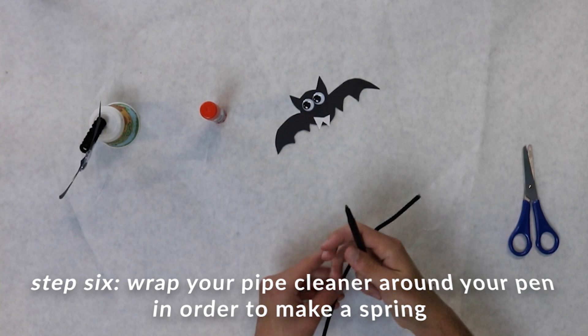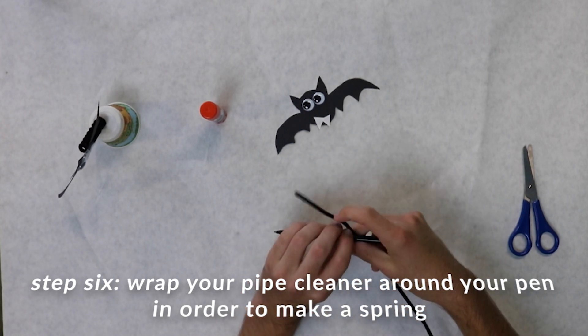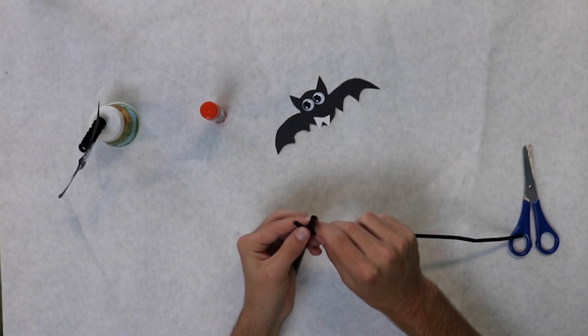Step six, wrap your pipe cleaner around the pen in order to make the spring.